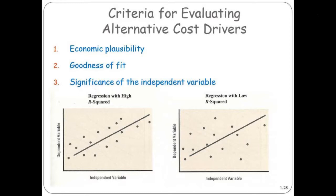Goodness of fit. Here are two least squares regression lines for two different sets of data. This one is a more plausible predictor of costs than this one, because the data is pretty well wrapped around our line. Here the data is spread more, so even though we have a line that's a least squares line, it is not necessarily a great predictor of the future.